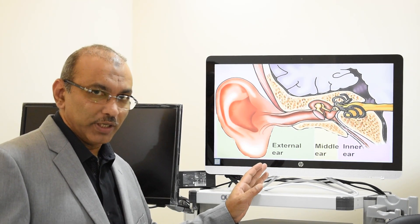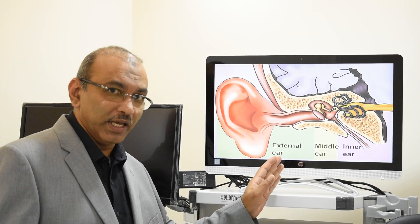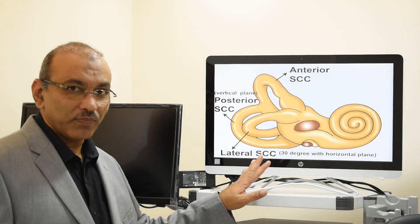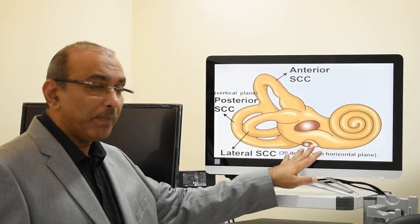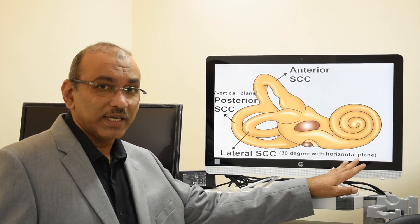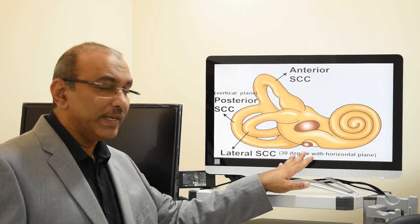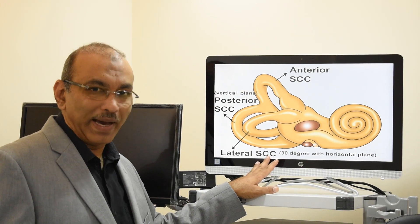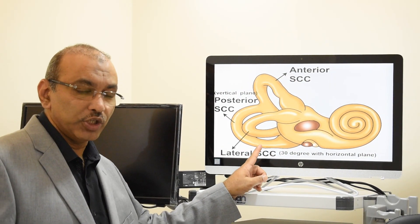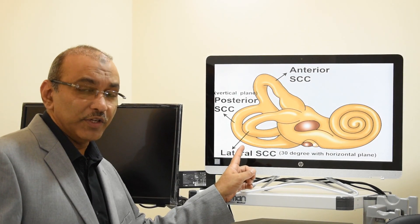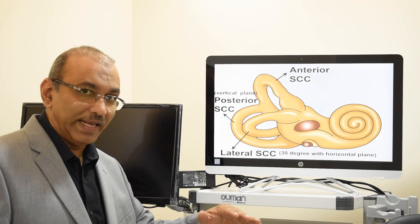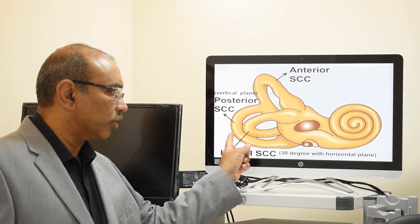This is a picture of the inner ear. It has got an anterior part, a middle part, and a posterior part. The anterior one is concerned with hearing, and the middle and the posterior are concerned with balance. The posterior part, as you see in this picture, has half-rings called semicircular canals. Depending upon the different plane, they are named as anterior, posterior, and lateral.